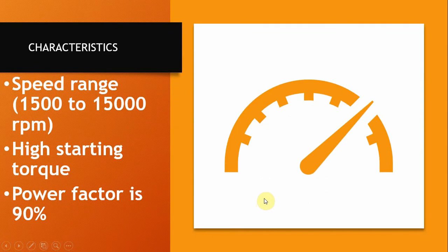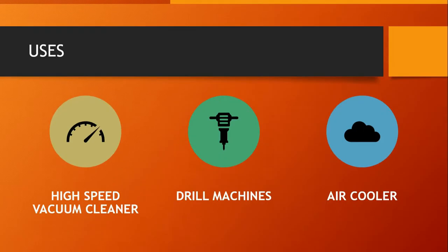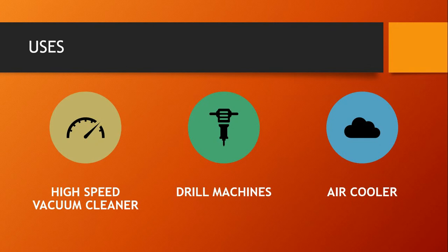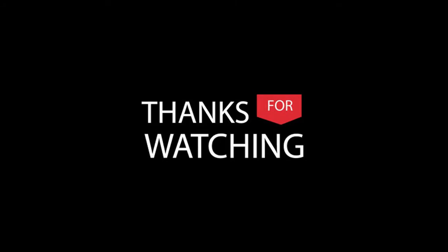The characteristics of AC series induction motors are: the speed range is 1500 to 15000 RPM, it has a high starting torque, and the power factor is 90%. It is used in high speed vacuum cleaners, drill machines, and air coolers. Thanks for watching.